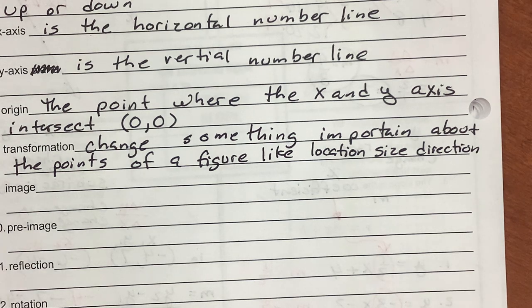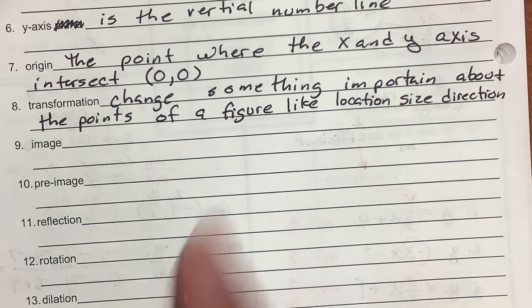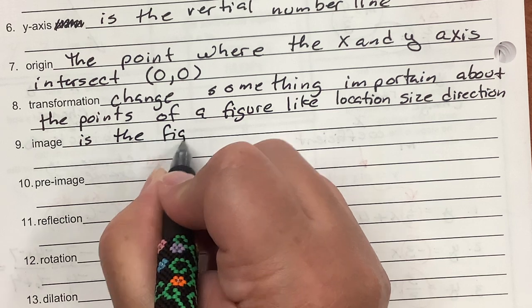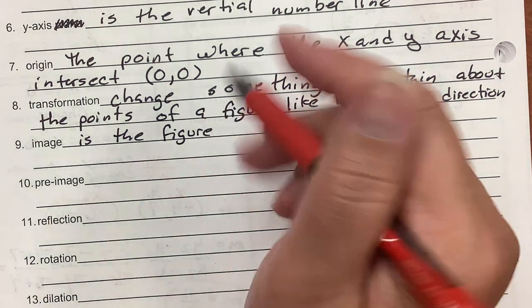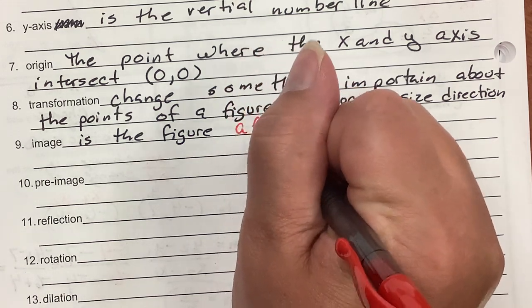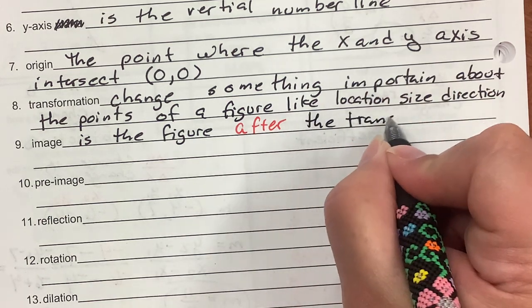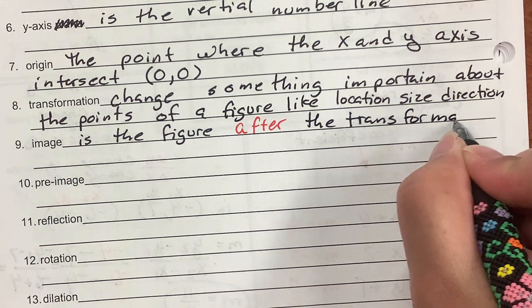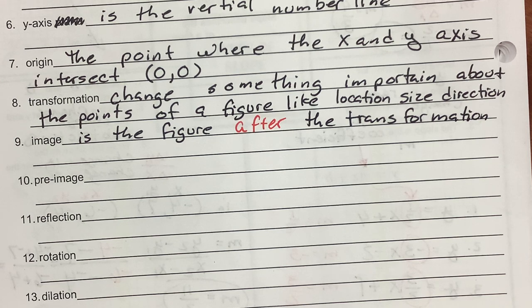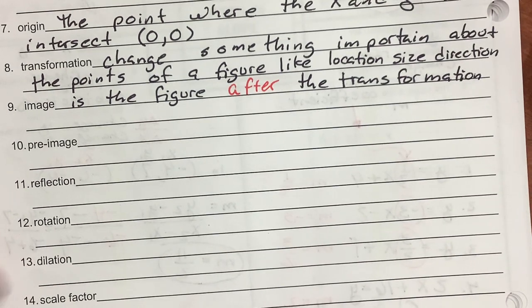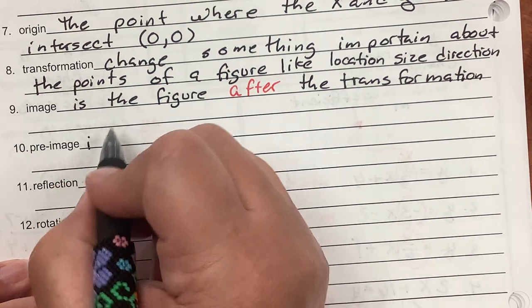An image is the figure after the transformation. I think about looking in a mirror and seeing my image. I'm the original, I'm the pre-image. My image is a reflection in the mirror after it has transformed me into something better looking. Pre-image is the figure before the transformation.